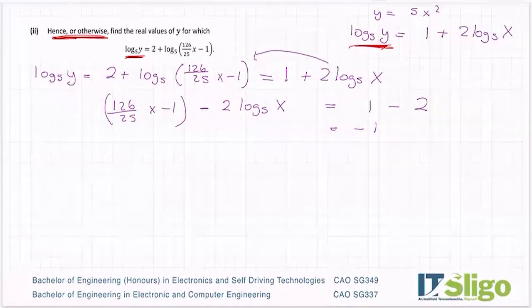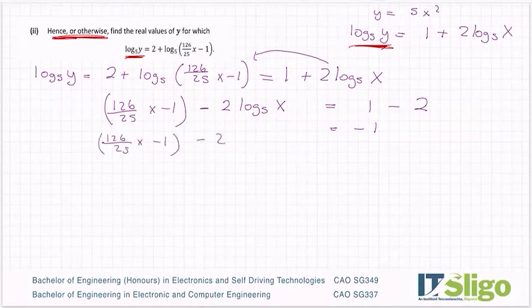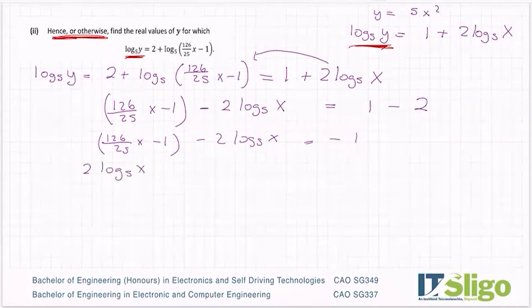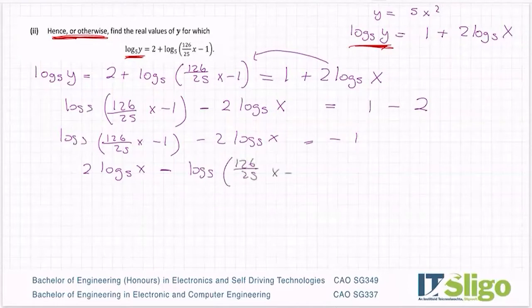This is equal to minus 1. And therefore I'm going to change the signs now all the way across, only in case I lose that minus. I'm not really doing anything mathematical. 2 log to the base 5 of X becomes a plus, that minus changes to a plus, and I'll go minus log to the base 5 of 126 over 25 X minus 1 equals 1. So nothing startling I did there, I literally just changed the signs all the way across just in case I dropped that minus because I tend to do that.